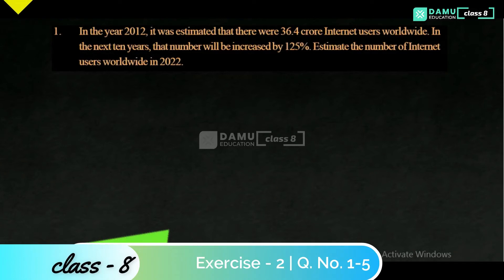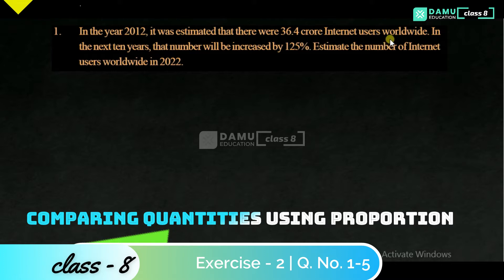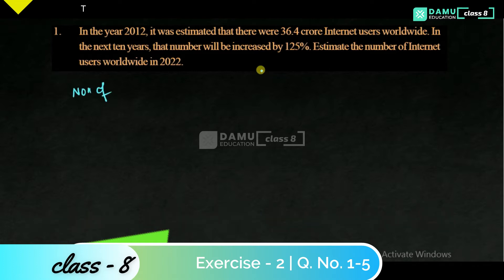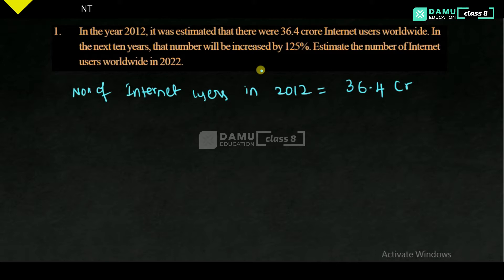In this module we are going to discuss the first question. In the year 2012 it was estimated that there were 36.4 crore internet users worldwide. In the next 10 years that number will be increased by 125 percentage. Estimate the number of internet users worldwide in 2022. So number of internet users in 2012 is 36.4 crore.